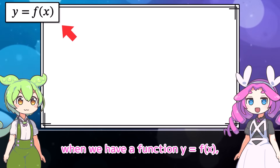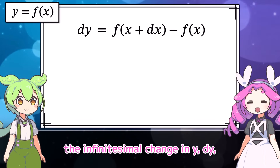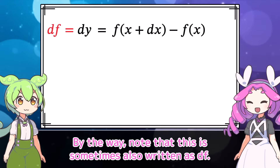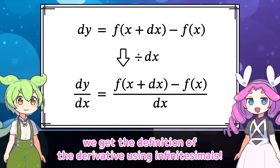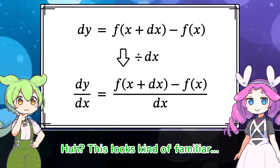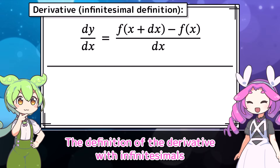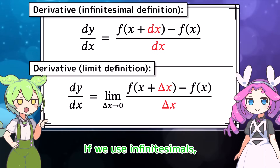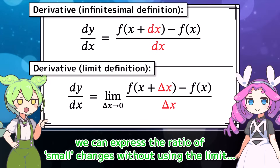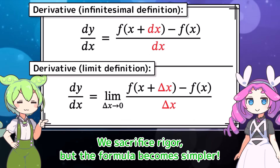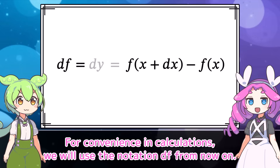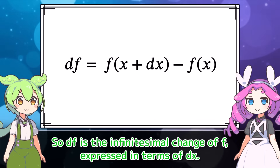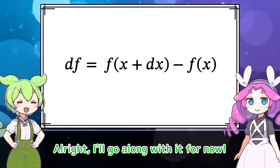To summarize the key point: when we have a function y equals f of x, the infinitesimal change in y, dy, can be expressed using the infinitesimal change in x, dx, like this. Note that this is sometimes also written as df. If we divide both sides by dx, we get the definition of the derivative using infinitesimals. The definition of the derivative with infinitesimals looks very similar to the rigorous definition using the limit — you can see how dx corresponds to delta x. If we use infinitesimals, we can express the ratio of small changes without using the limit. We sacrifice rigor, but the formula becomes simpler. For convenience in calculations, we'll use the notation df from now on — df is the infinitesimal change of f expressed in terms of dx.